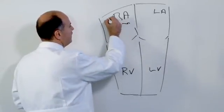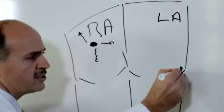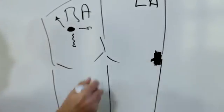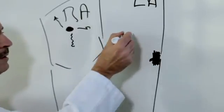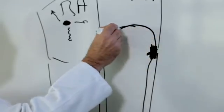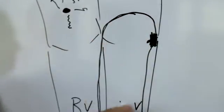Or if you have an extra connection, say, between the upper and the lower chamber of the heart, right over here, for example, whereby now the electrical impulse goes down to the lower chamber, up that accessory pathway, down the lower chamber, and spins around, giving you a fast heartbeat.